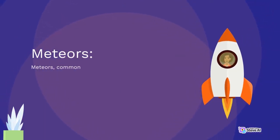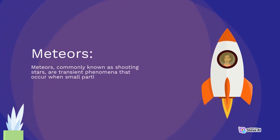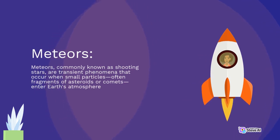Meteors, commonly known as shooting stars, are transient phenomena that occur when small particles, often fragments of asteroids or comets, enter Earth's atmosphere.